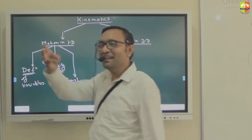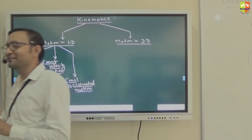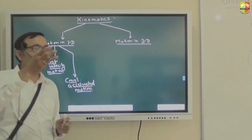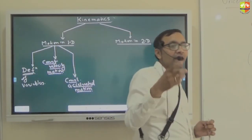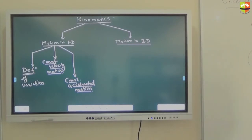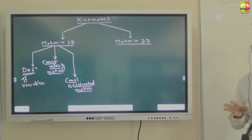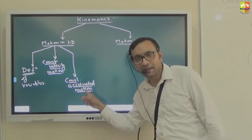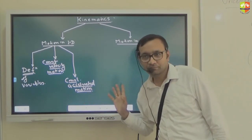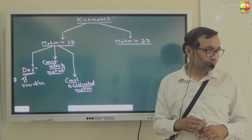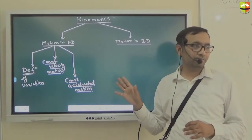For constant accelerated motion, there are three equations of motion that are valid only when acceleration is constant. We are going to use those three equations of motion to analyze the motion. We are going to derive them also and study them from scratch.